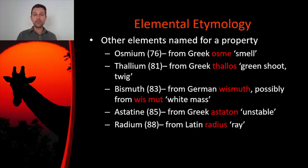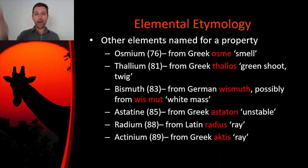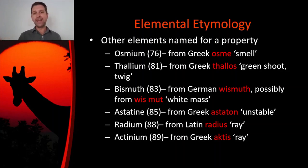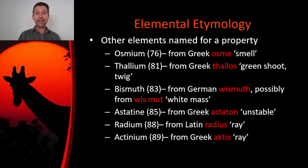Two other radioactive elements discovered fairly early are radium and actinium, both with the same ultimate meaning but from different languages. Radium gets its name from the Latin word for ray, 'radius,' and actinium from the ancient Greek word for ray, 'aktis,' with the N coming from the plural form. Both are radioactive elements that shoot forth rays of energy. The words radio and radioactive also come from the Latin 'radius,' so that all makes sense.